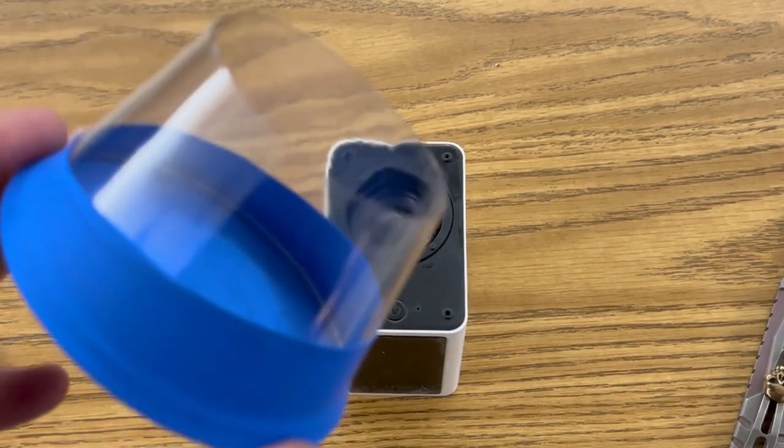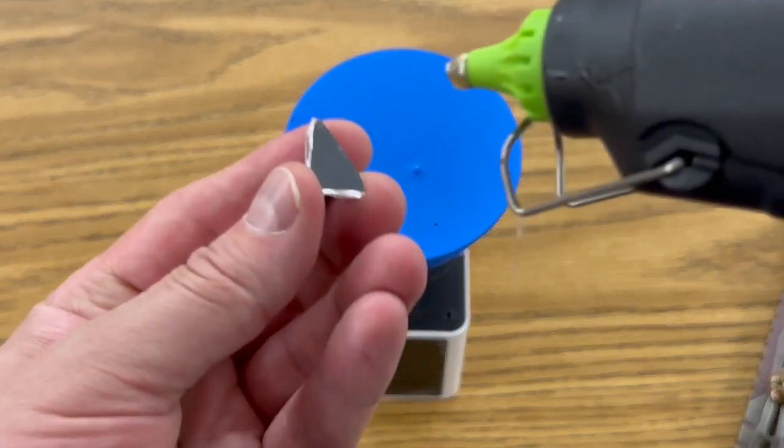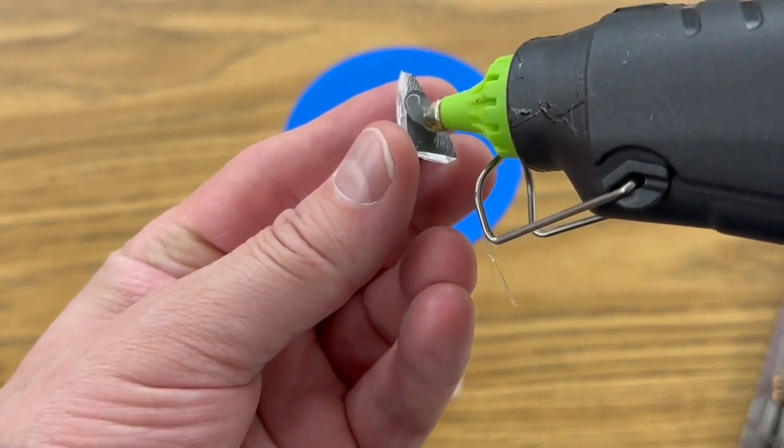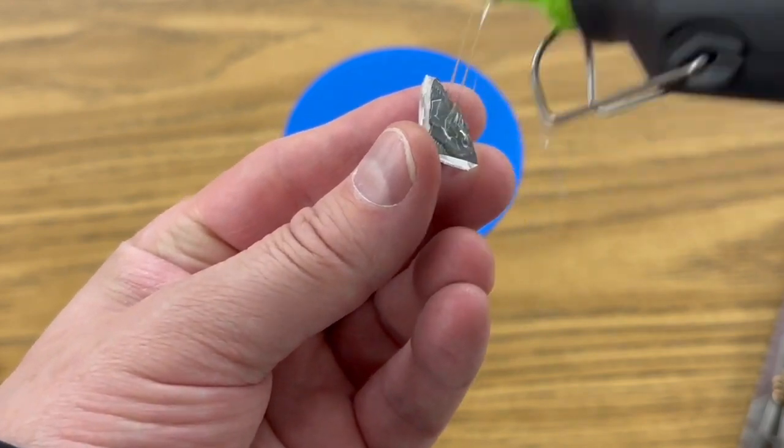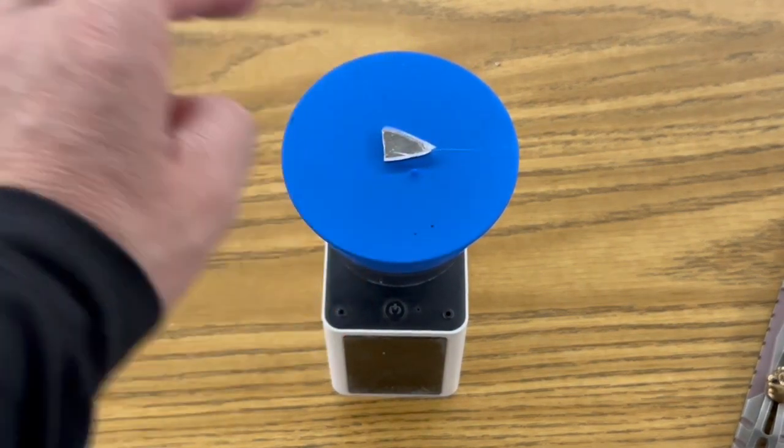So once you've cut out the back, you want it to rest right over your Bluetooth speaker. And then you're going to glue with your hot glue gun that little piece of mirror, and you want to get this right in the middle of it. So it looks like that.